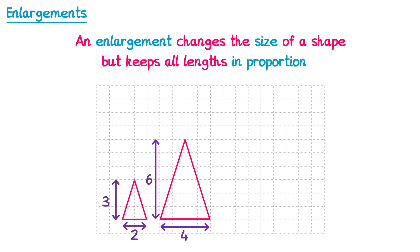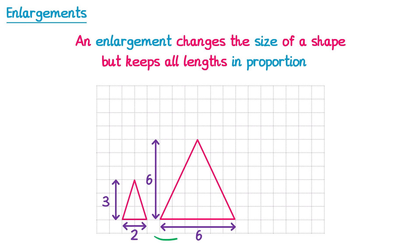It's important to understand that just because a shape has changed size it doesn't necessarily mean it's an enlargement. It's important that all of the lengths are in proportion. For example if we change this middle triangle so the base is now 6, this is not an enlargement. The reason is the base has been multiplied by 3 since 2 times 3 is 6, but the height has only been multiplied by 2. We need these numbers to be the same if it's going to be an enlargement.